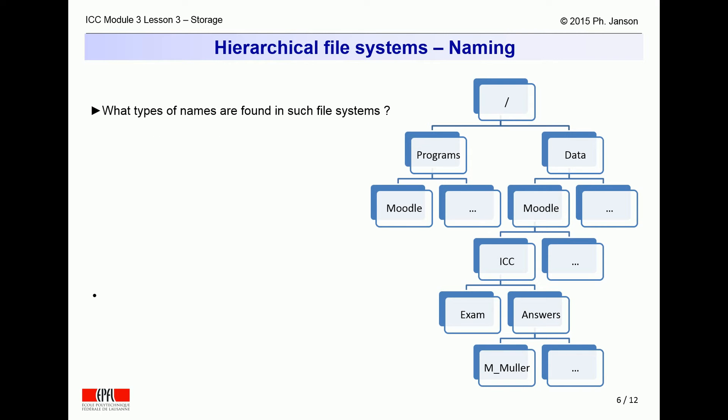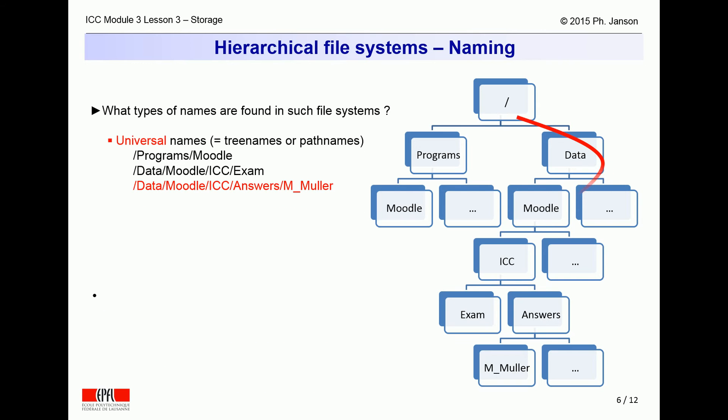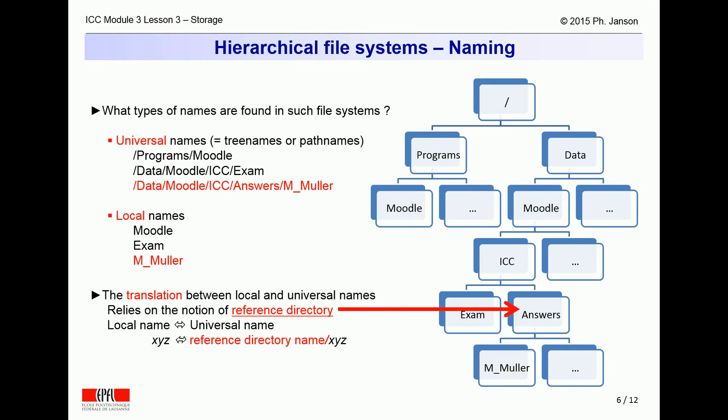Using such tree names is always possible, but not always convenient. Such tree names uniquely identify files in the entire file system. However, programs and their programmers often prefer to use shorter local names to refer to files rather than the long tree names. The extension of short local names into long tree names is automated based on the notion of a reference directory. A short local name can be extended into an equivalent and unambiguous tree name by prefixing it with the tree name of the directory of reference.